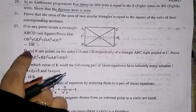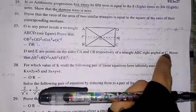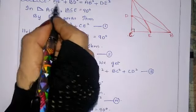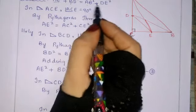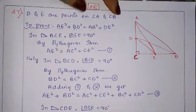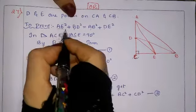Alternate for question 27: D and E are points on sides CA and CB respectively of triangle ABC, right angle at C. Prove that AE² + BD² = AB² + DE².